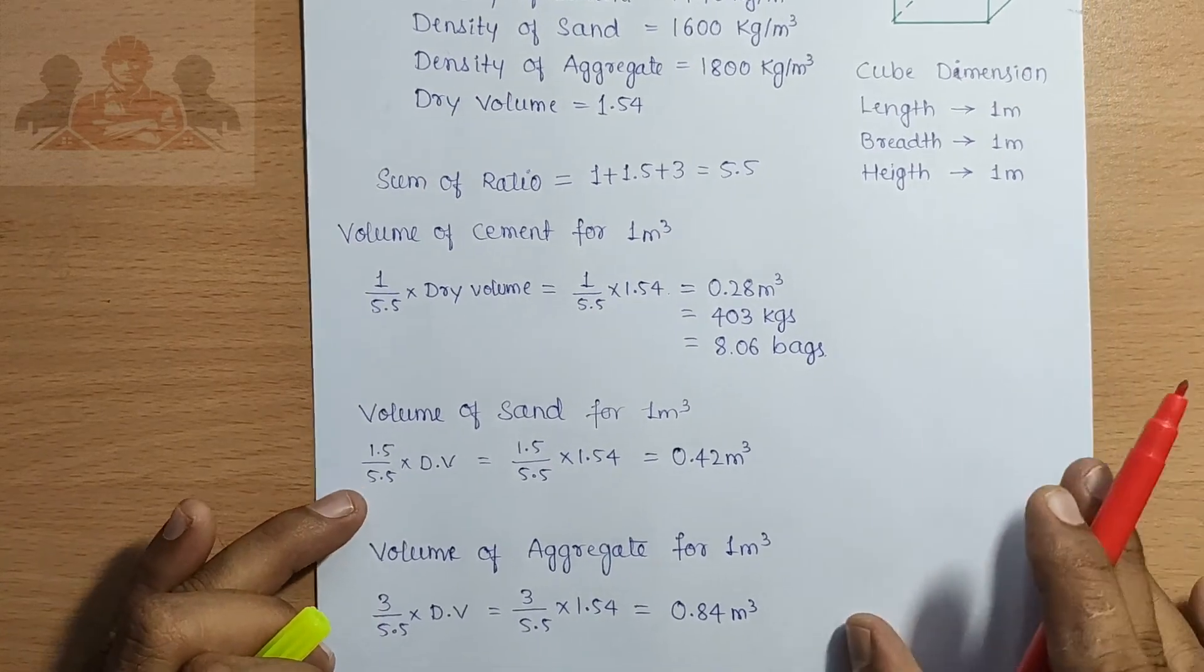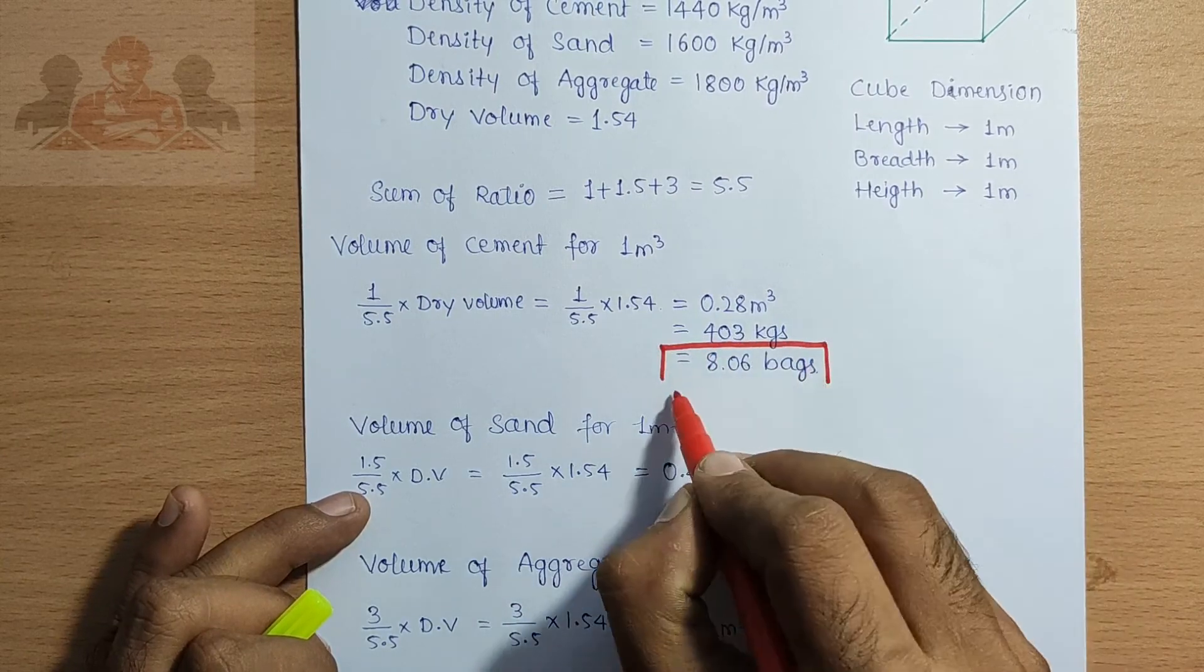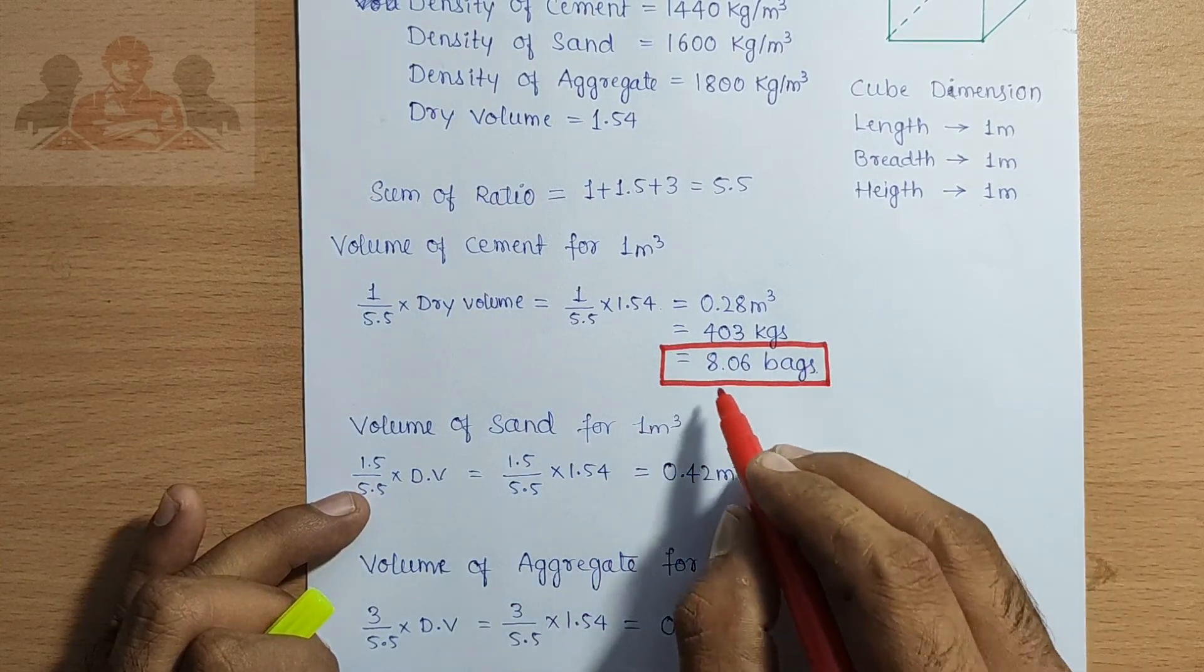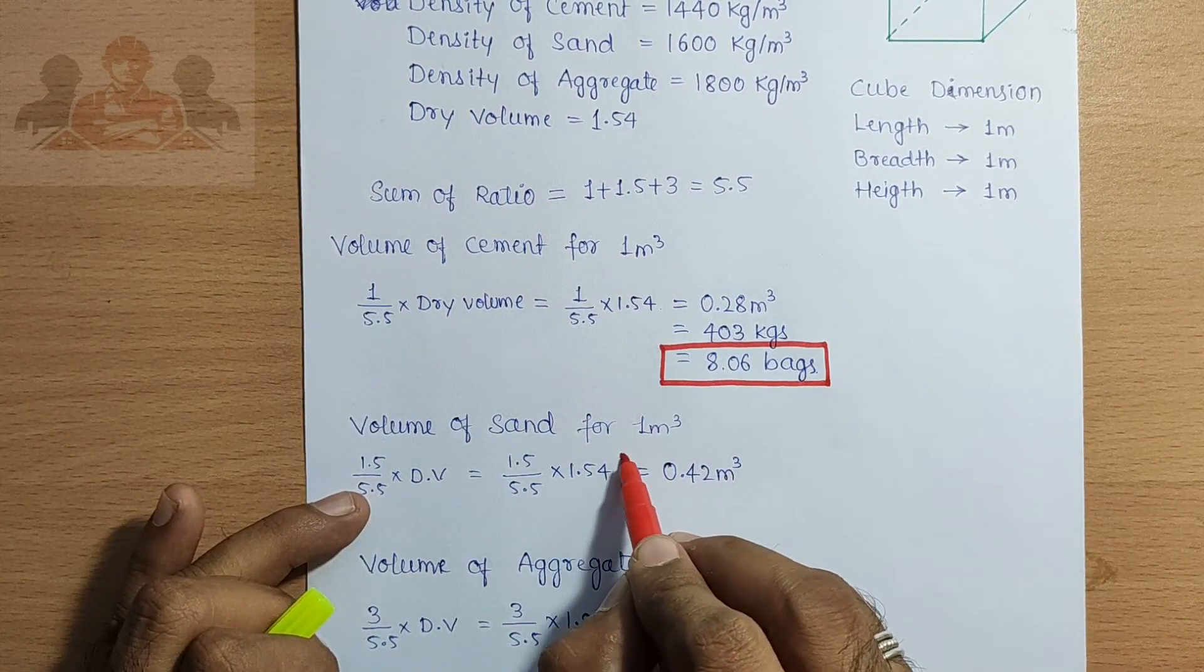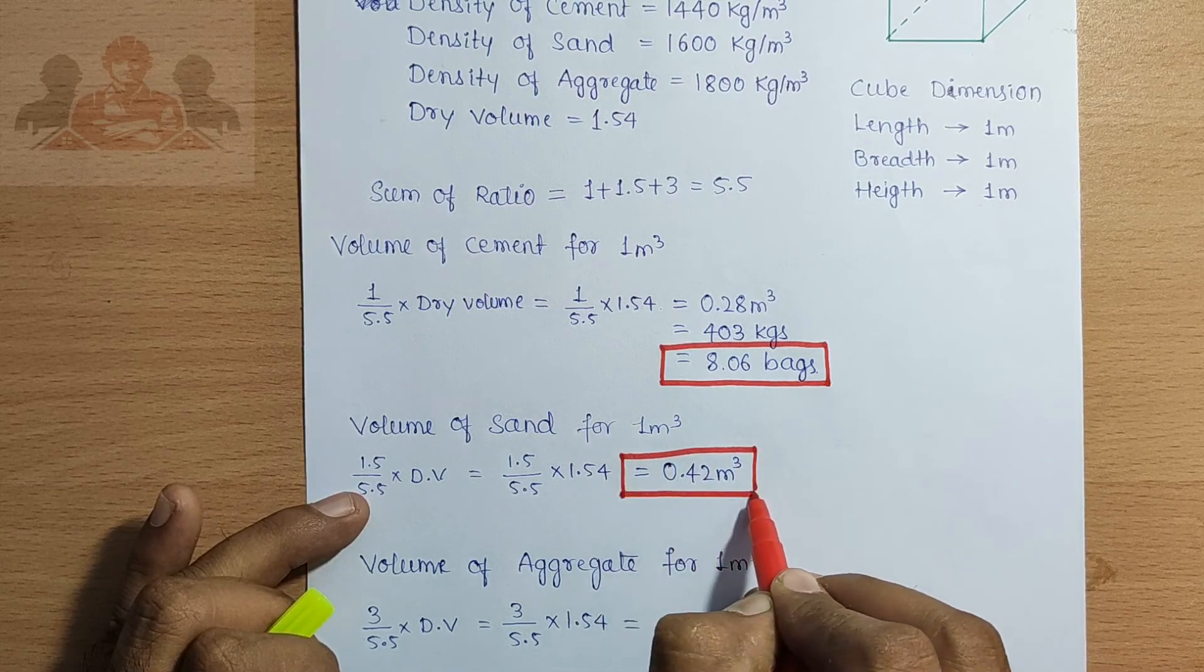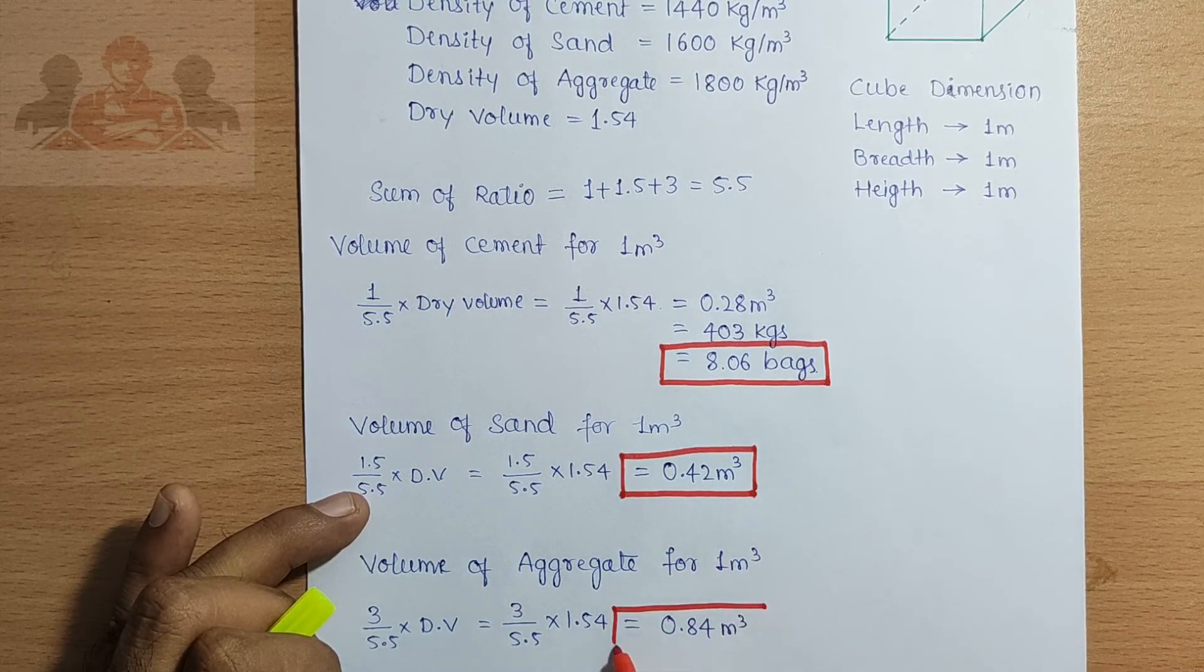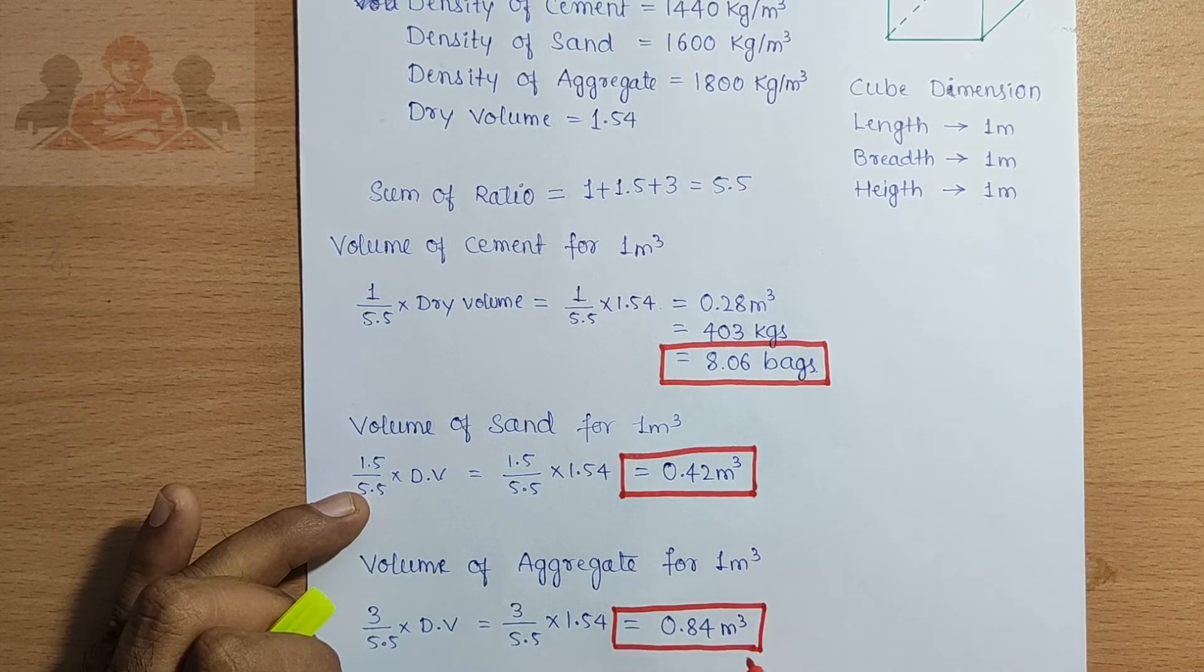For M20 ratio 1 meter cube: number of bags of cement 8.06 bags, quantity of sand 0.42 meter cube, and quantity of aggregate 0.84 meter cube.